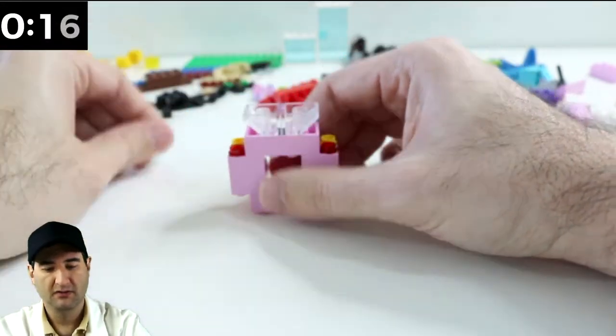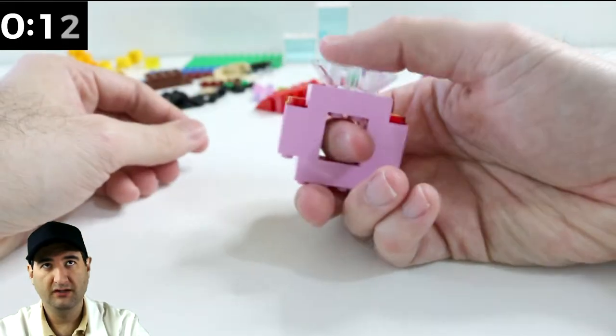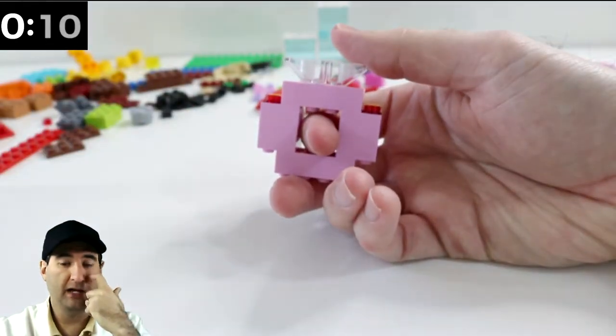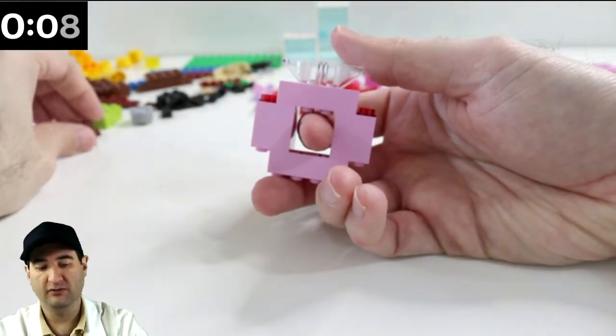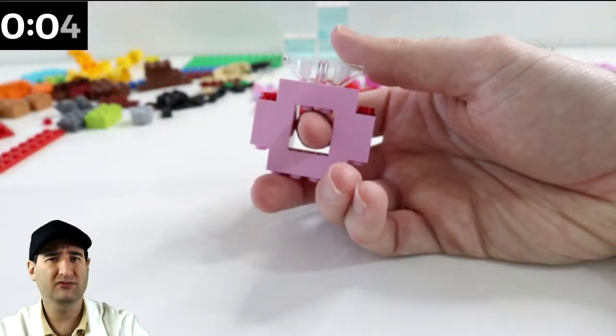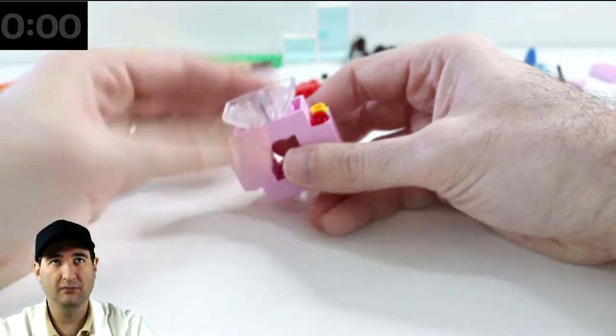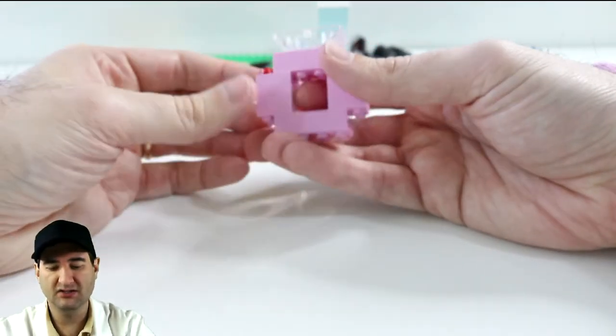That's a ring. So hopefully you were able to make a ring as well. Again, if you want to play along with us, the link to the kit is down below. And I think it's about $13 to $15 on Amazon. So make sure to go pick that up. And then you can play along with us each and every day.